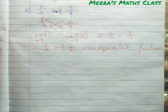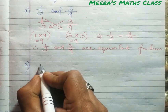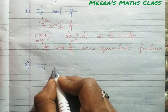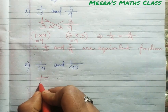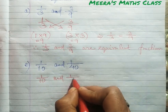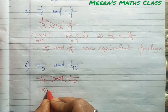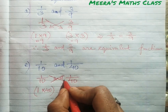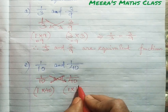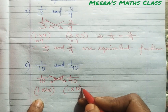Let me pick another example: 1/10 and 1/40. To check, you cross multiply: 1 multiplied by 40 on one side, and 1 multiplied by 10 on the other side. So we get 1×40 = 40 and 1×10 = 10.